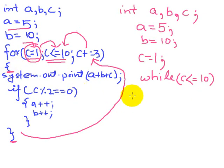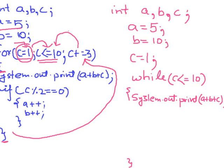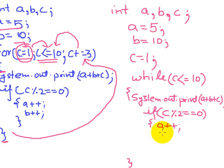Now we have the body of the for loop — we have to write all the statements which are within the body of the for loop as they are. So that is System.out.print, and what we have to print is a plus b plus c. And we have: if c mod 2 equals to equals to 0, then a plus plus — meaning if this condition becomes true, then a plus plus and b plus plus, as given.